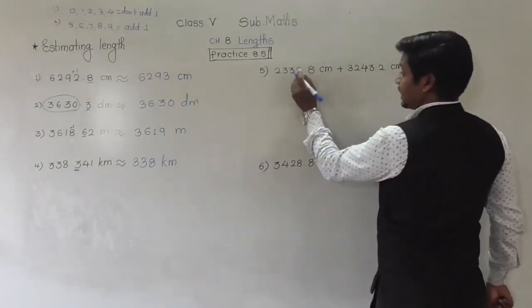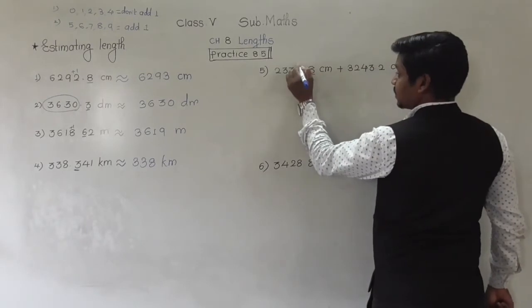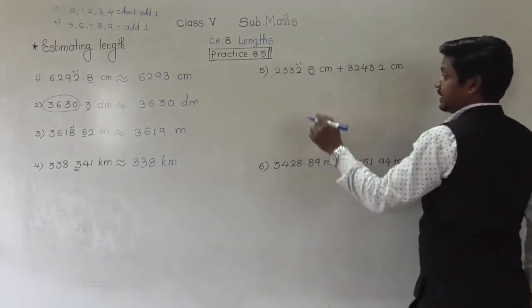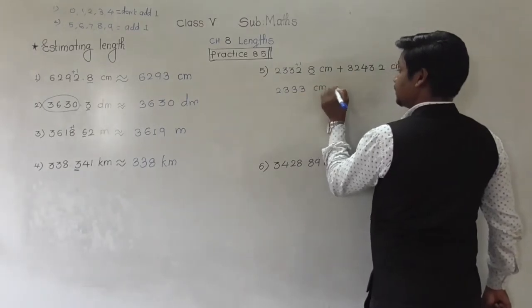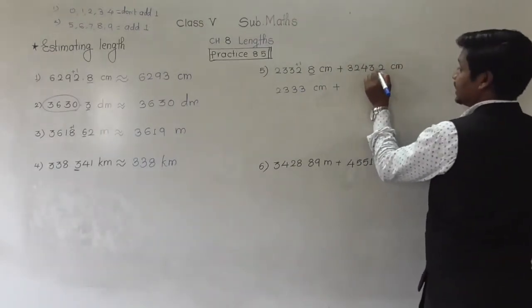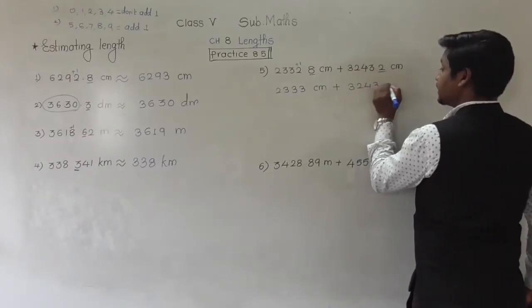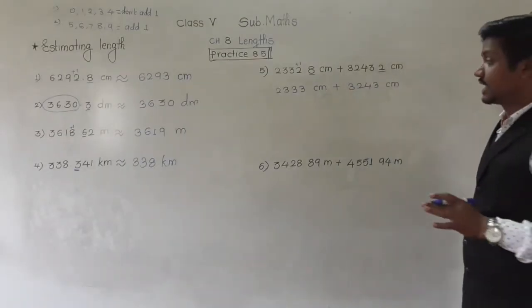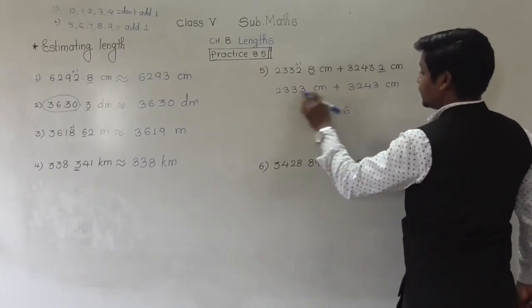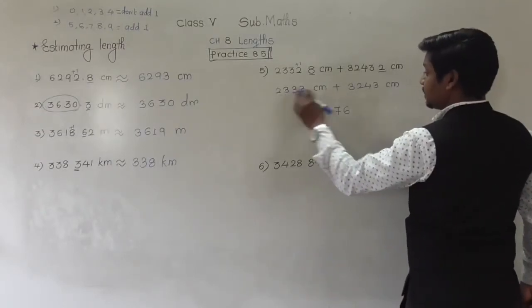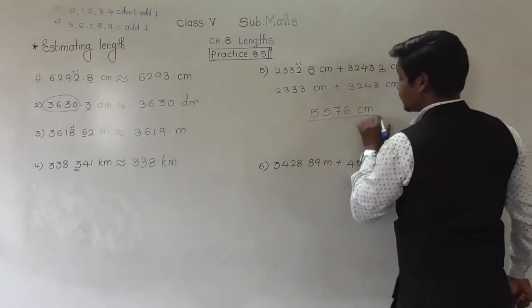For 2332.8 plus 3243.2 centimeters: first digit after decimal in 2332.8 is 8, so we add 1 — it becomes 2333 cm. For 3243.2, the first digit after decimal is 2, so we don't add 1 — it stays 3243 cm. Now we add: 3 plus 3 is 6, 3 plus 4 is 7, 3 plus 2 is 5, 2 plus 3 is 5. The answer is 5576 centimeters.